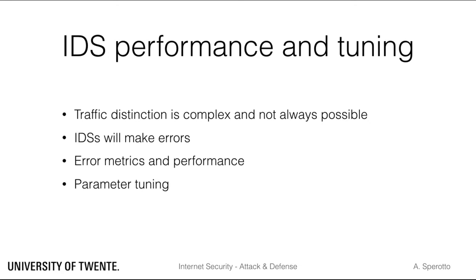We then have seen that traffic classification is a complex problem, and it is safe to assume that we will incur situations in which telling apart malicious and benign traffic is actually not possible. This means that IDSs will make classification errors. We have seen how to quantify those, and how we can evaluate the performance of an IDS.